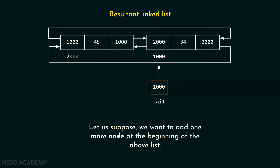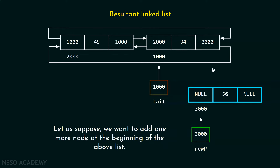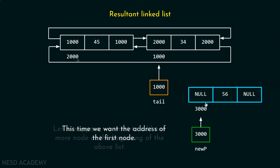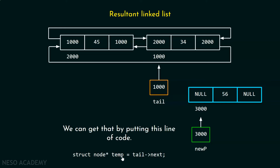Now, let us suppose we want to add one more node at the beginning of the above list. For this purpose, we need the address of the first node. In the previous case, we had just one node, which was both first and last. But here we have two nodes and we need the address of the first node. For this purpose, we will keep a temp pointer using: struct node star temp equal to tail next, so that temp points to the first node of the list.